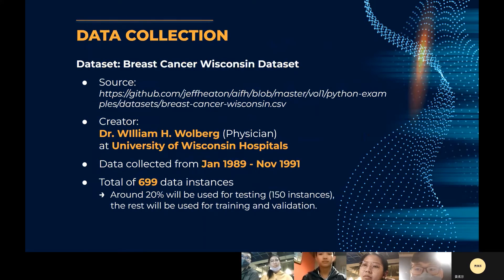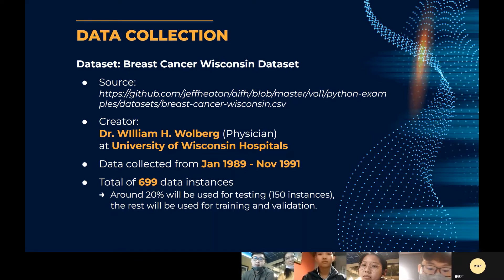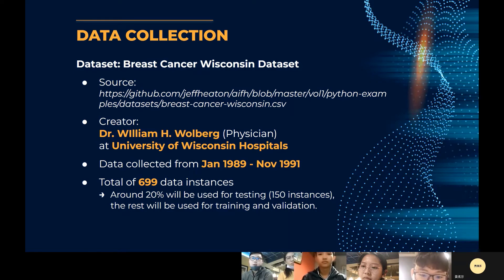We get our data from the Breast Cancer Wisconsin dataset. The source can be found on GitHub, and the creator of this dataset is Dr. William H. Wolberg, a physician at the University of Wisconsin Hospital. The data were collected from January 1989 to November 1991. Even though the data is quite old, it is reliable as many studies have used it. There are a total of 699 data instances, with around 20% — approximately 150 instances — used for testing, and the rest used for training and validation.